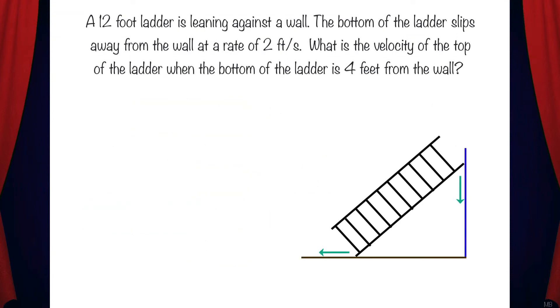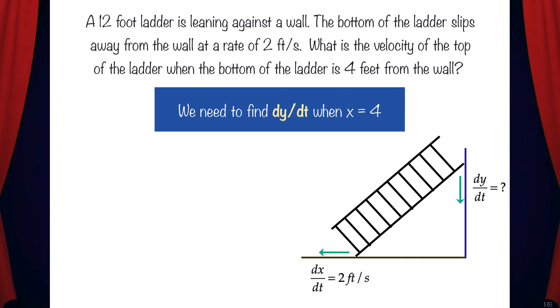The bottom of the ladder is moving away from the wall at a rate of 2 feet per second. We'll call this dx/dt because the bottom of the ladder is moving in the x direction. The top of the ladder moves down in the y direction so we'll call its rate dy/dt. Our goal is to find dy/dt when the bottom of the ladder is 4 feet from the wall. In other words, when x equals 4.